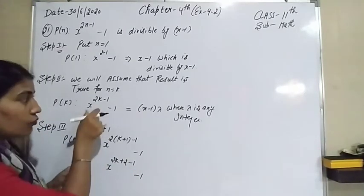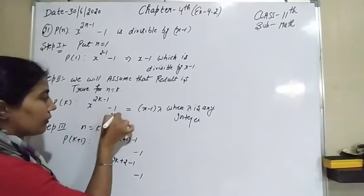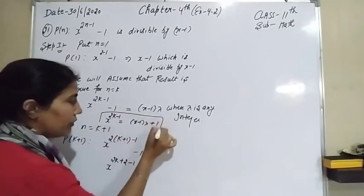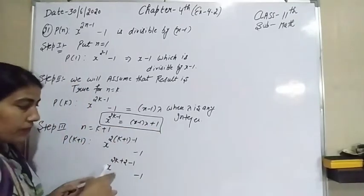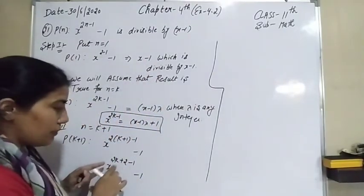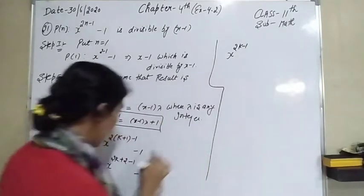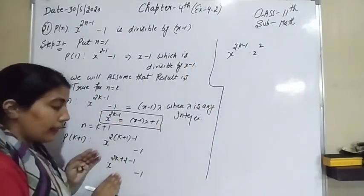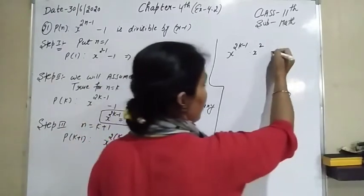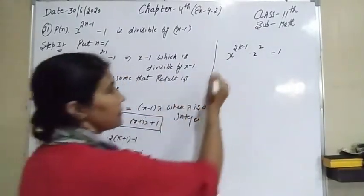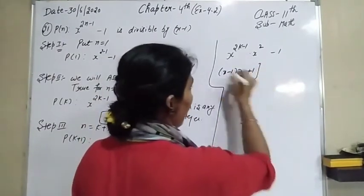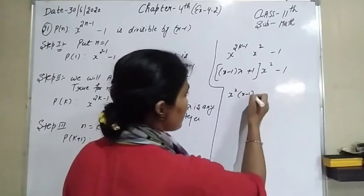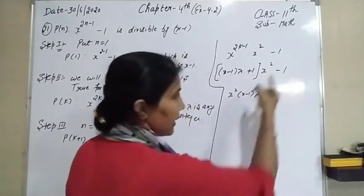Now look here: the value of x raised to the power 2k minus 1 appears. We will make them together so we can put this value in. We can find the value of x raised to the power 2k minus 1, that is equal to (x minus 1) into lambda, and minus 1 becomes plus 1. So x raised to the power 2k minus 1 equals (x minus 1) lambda plus 1. Since the bases are the same, powers can be added, so it can be written as x raised to the power 2, multiplied as x squared, and here minus 1. The value of x raised to the power 2k minus 1 is (x minus 1) lambda plus 1, multiplied with x squared, minus 1.